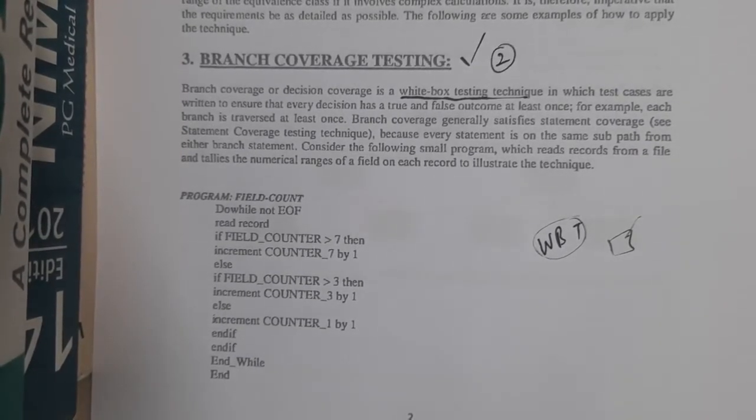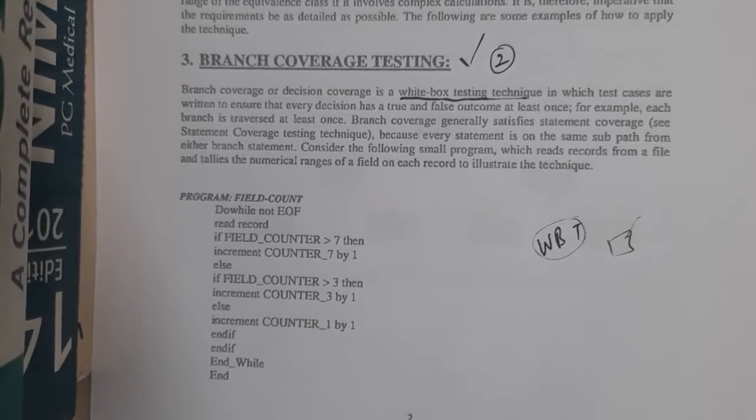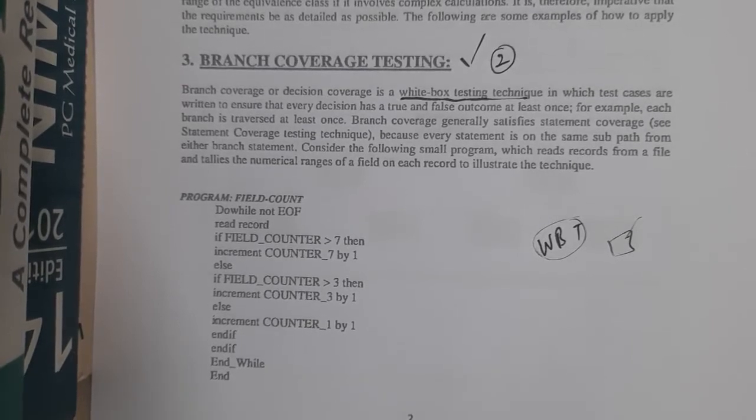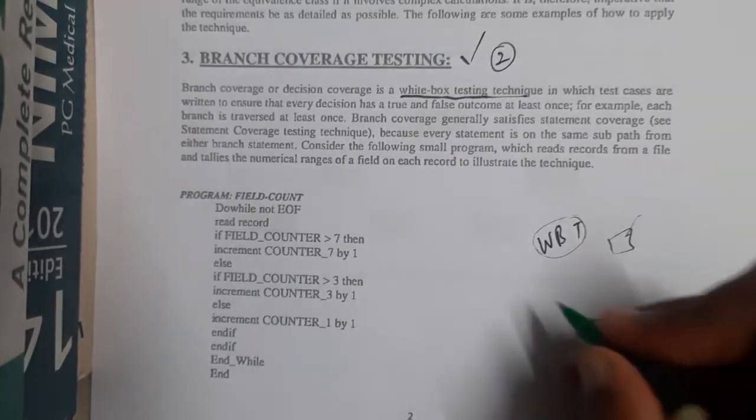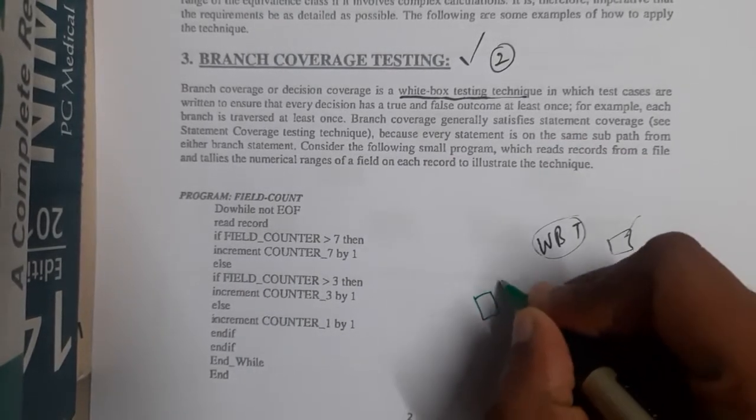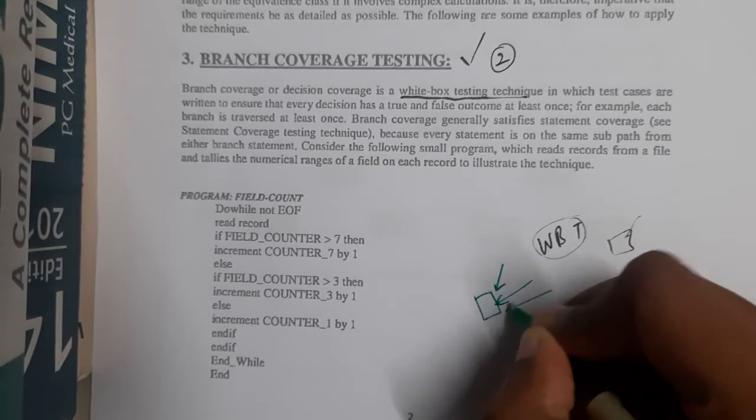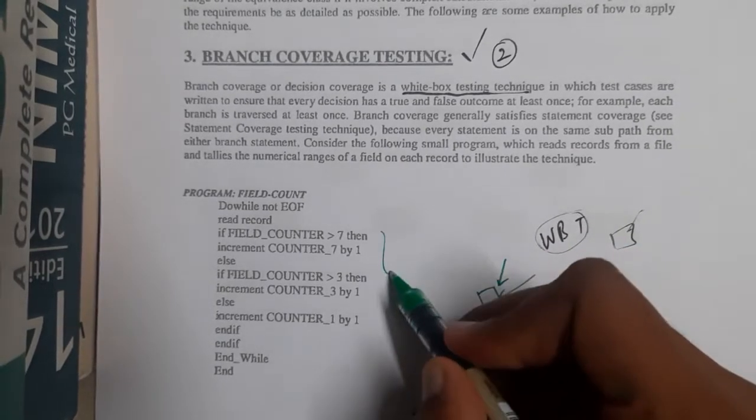So your question will be, what is this branch coverage testing? Basically, whenever there is a program, commonly if it is a normal program, it will for sure have if or if-else loops or blocks, right?